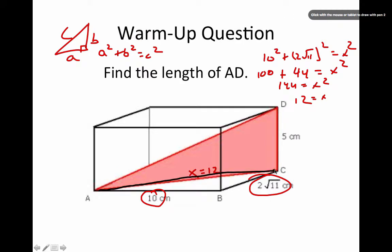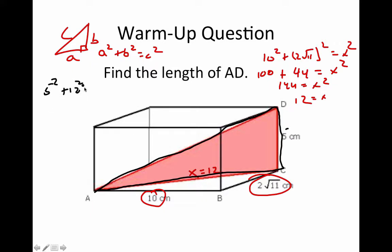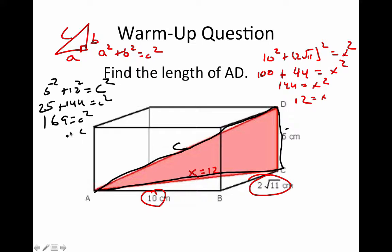Now I have a bigger right triangle with legs 5 and 12. Some of you may remember this is a Pythagorean triple — when all three sides of a right triangle are nice integers. 5² + 12² = 25 + 144 = 169 = C², so C = 13. That's a 5-12-13 Pythagorean triple.